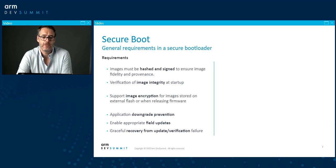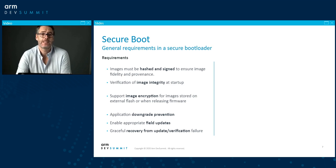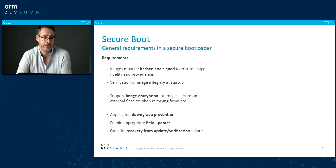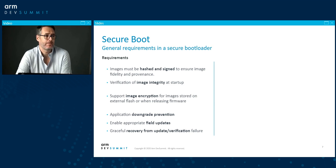Here are some requirements identified as essential in any secure boot system. Images must be hashed and signed to ensure image fidelity and provenance. Verification of image integrity at startup is essential to make sure images haven't been tampered with between boots. You need to support image encryption for images stored on external flash or published on public servers. Ideally, you want application downgrade protection, so malicious actors can't intentionally revert to firmware with known vulnerabilities. You also need mechanisms for field firmware updates and graceful recovery from update or verification failures.